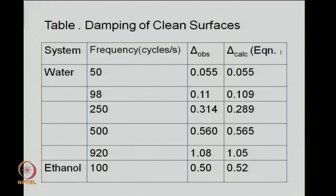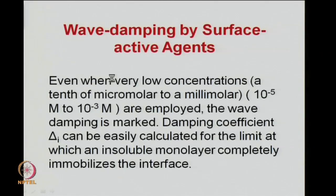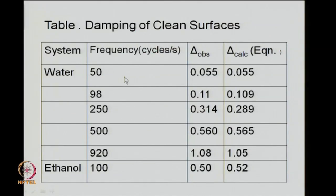We can look at the values over here for clean surfaces for water. We chosen a parameter here frequency, when the frequency is varied from 50 to about 920, the observed damping coefficient goes up from 0.055 to 1.08. Calculated values follow closely these observed values. For ethanol we have only one single data point here, for a frequency of 100, there is a reasonably good agreement between the damping coefficient measured and calculated.